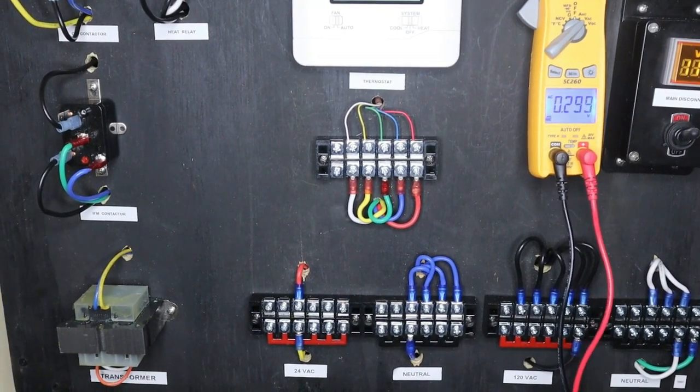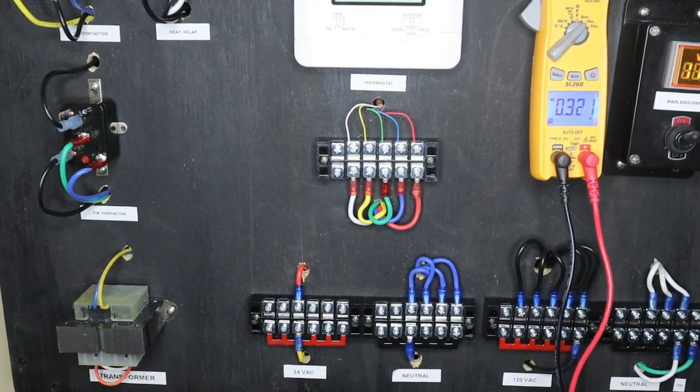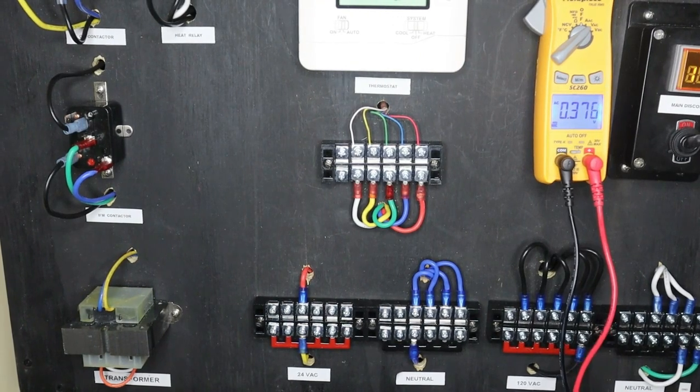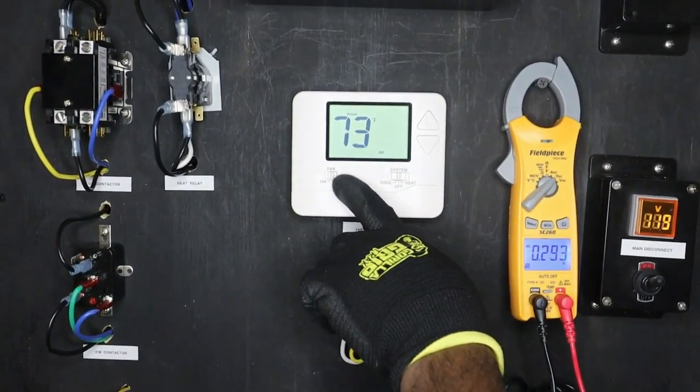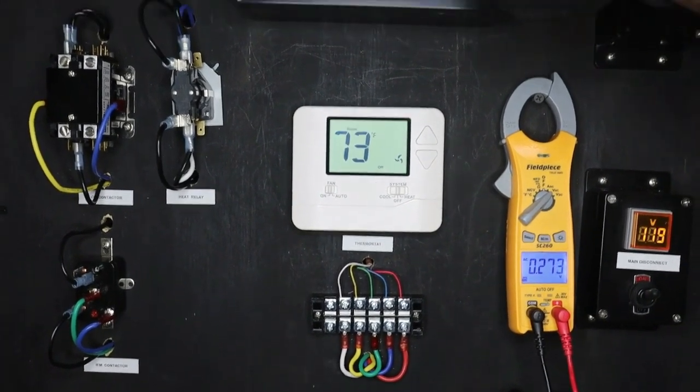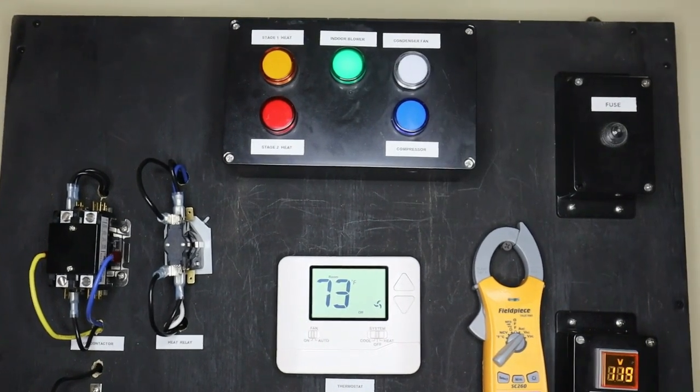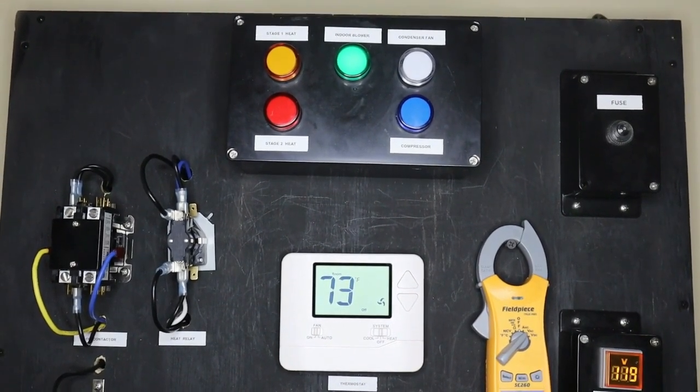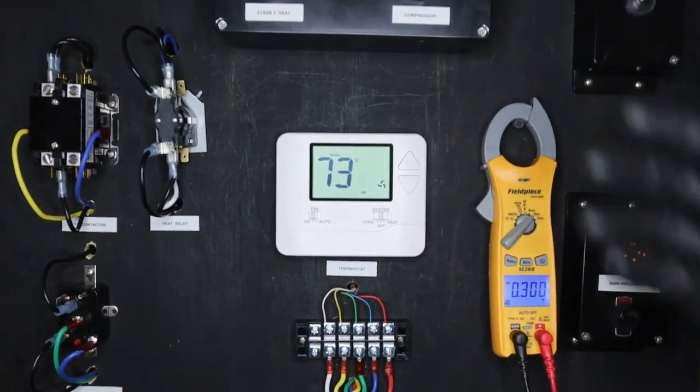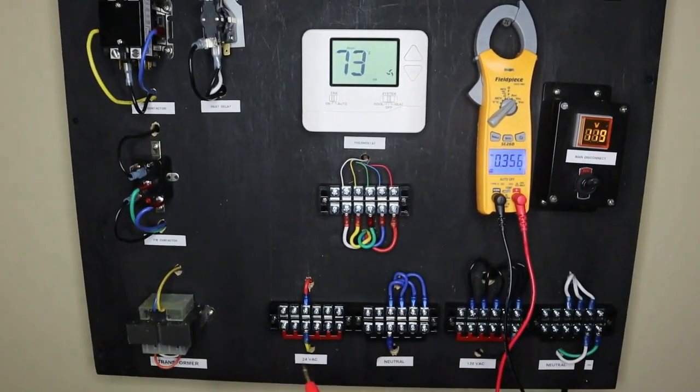Now in a normal case we want to simulate how our indoor blower motor works. So on the thermostat we'll turn the fan on. As you can see we now have our indoor blower light on. So in your normal residential or commercial unit if you go next to your air handler you could hear your blower motor running. So this is how this actually operates.